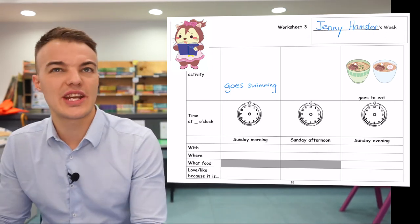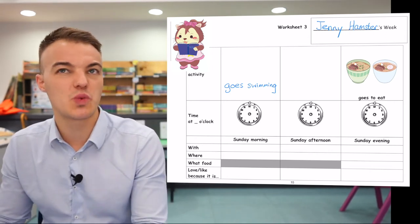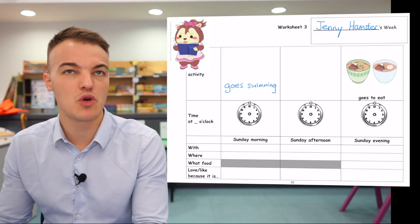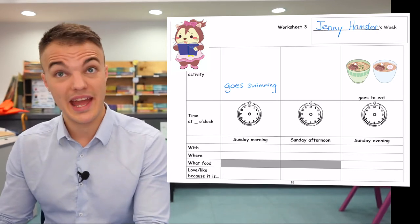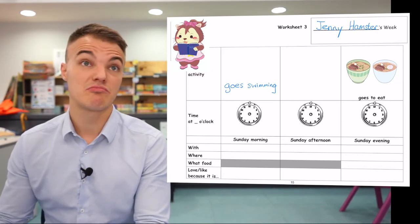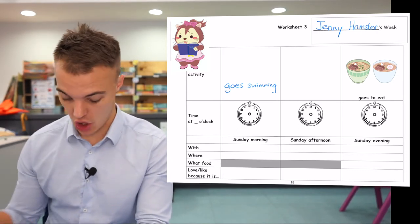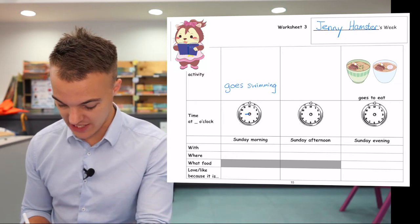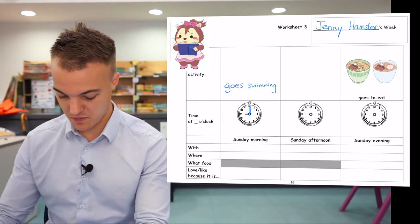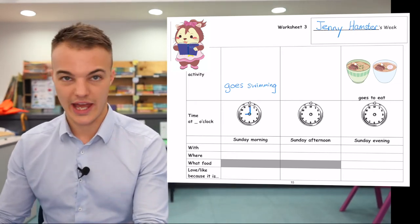What time does Jenny Hamster go swimming on Sunday morning? I think she goes swimming at nine o'clock. So I can make the clock say nine o'clock.